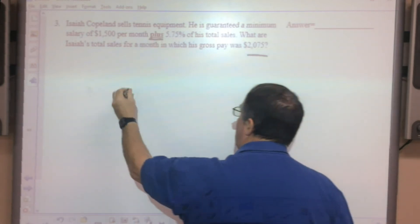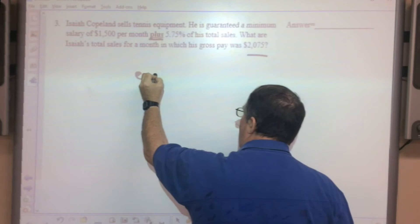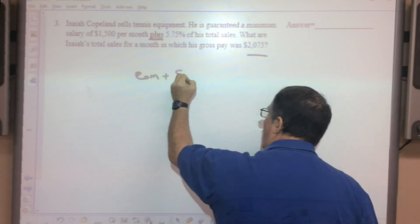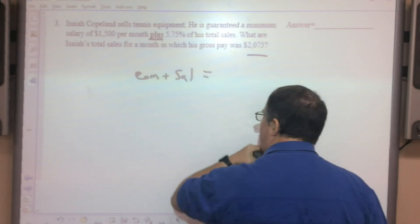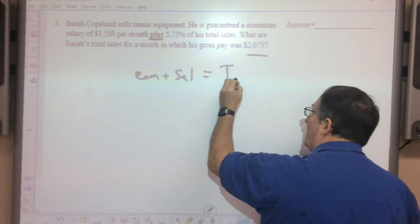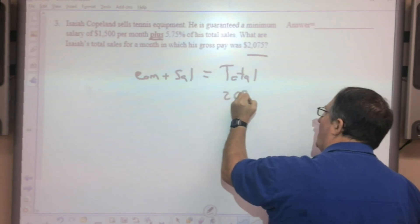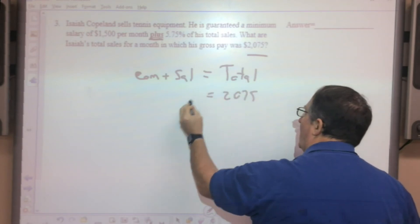Formula for straight commission is total sales times the commission rate. This is not straight commission, you get a commission plus a salary. So commission plus salary is going to be your total gross income.